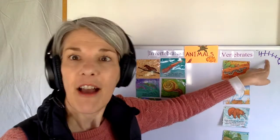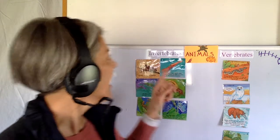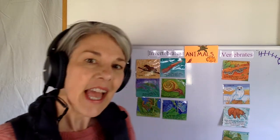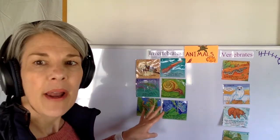We decided we wanted to just look at animals, so we got rid of plants and people. We've been working on taking all of those animals and putting them into two big groups. One group is animals that have bones - do you remember the big science word for that? That word is vertebrate. An animal that does not have bones is called an invertebrate - no bones.